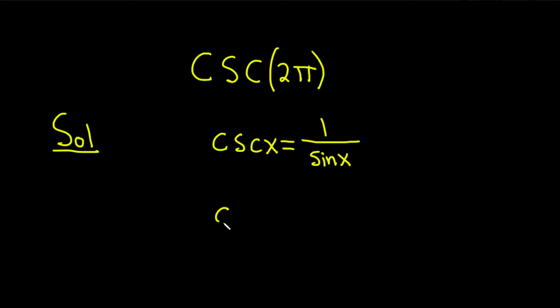For us, x is 2 pi, so cosecant of 2 pi would then have to be 1 over the sine of 2 pi.